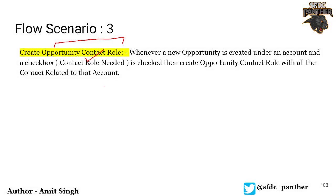Now let's quickly see how we can do this. First we'll talk about what Opportunity Contact Role is, and then we'll discuss how to implement it using Flow. Opportunity Contact Role, as its name indicates, is a junction object between Opportunity and Contact.